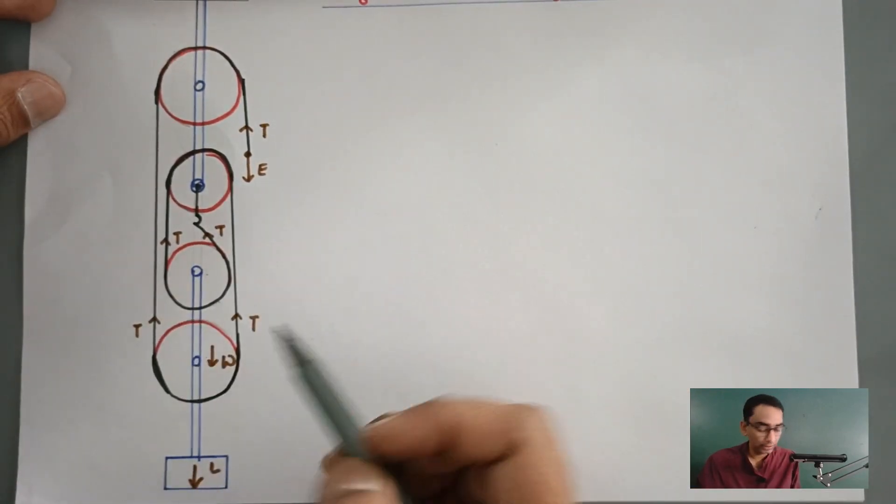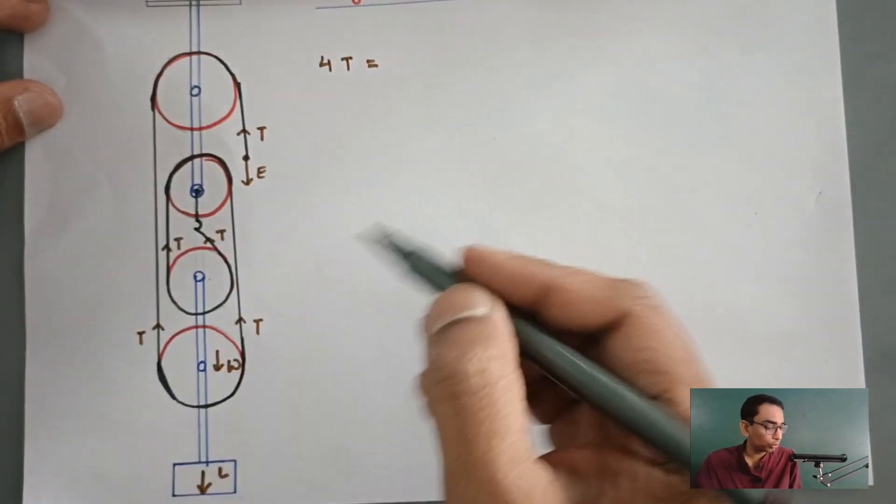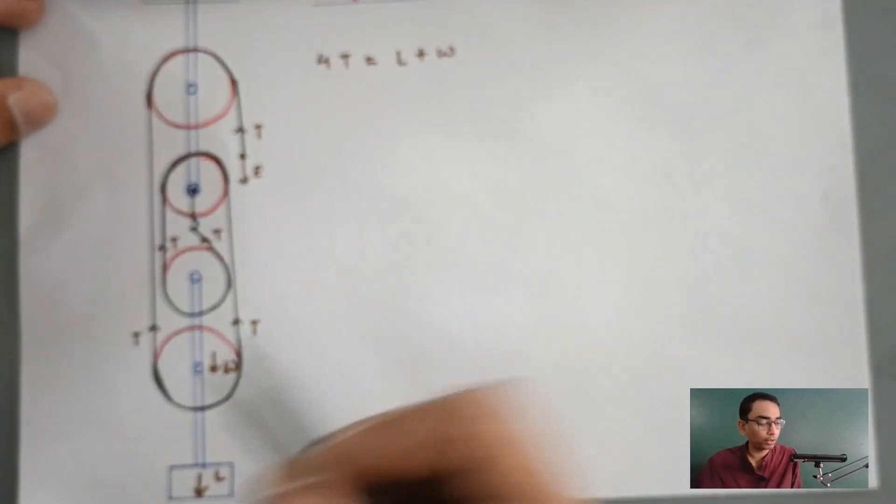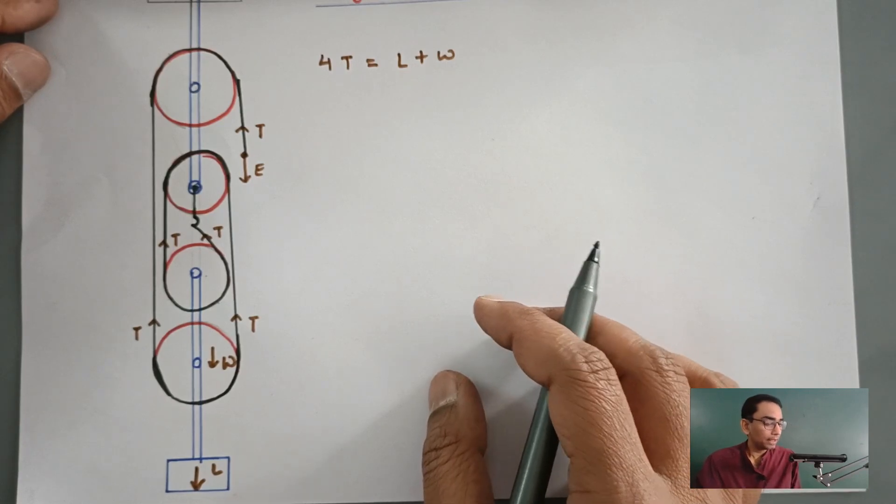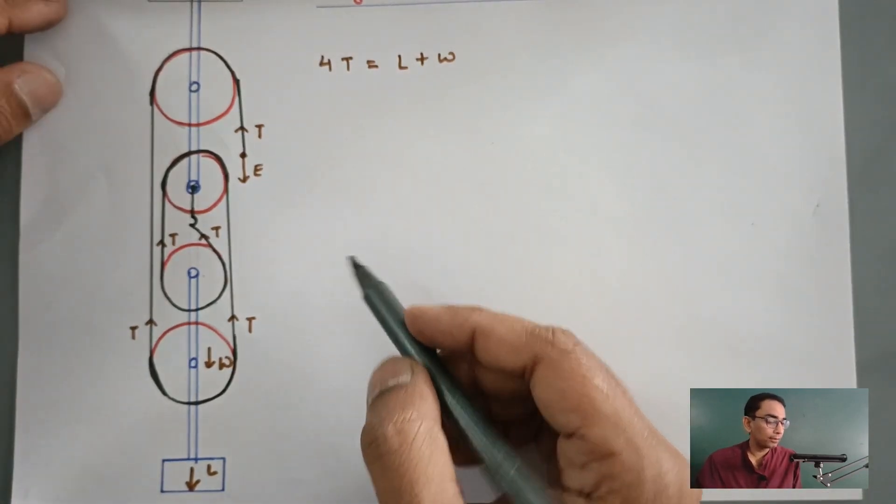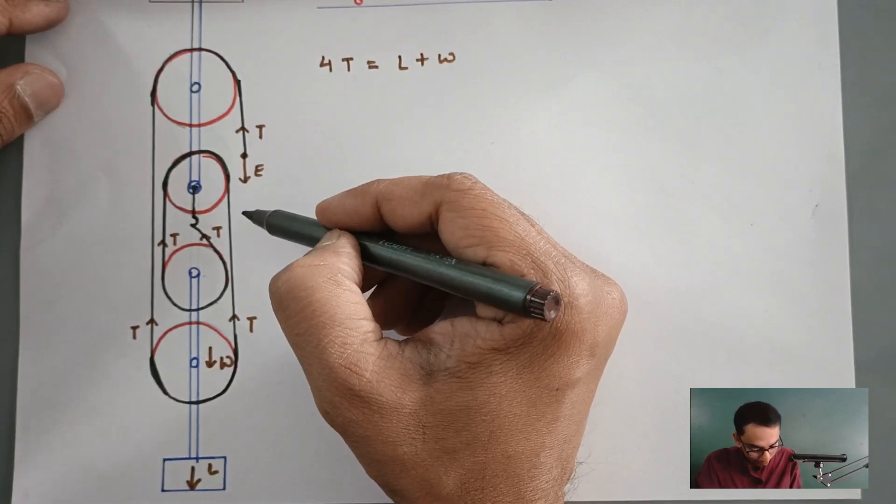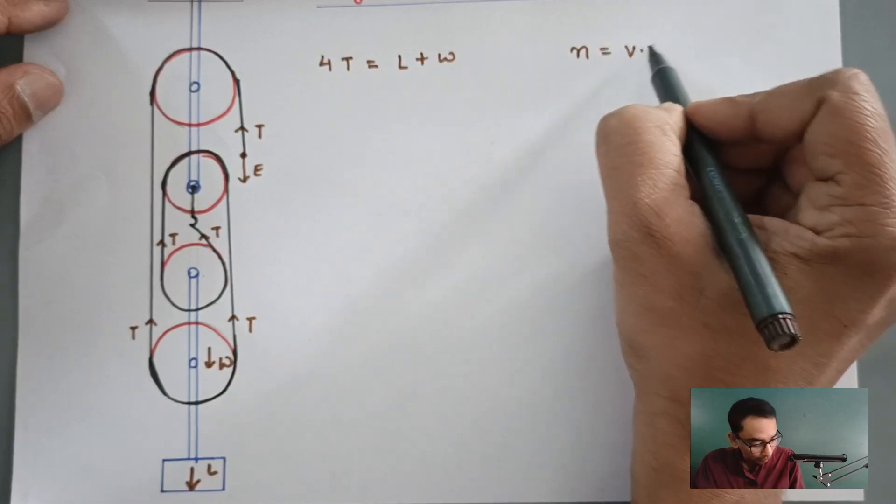Four tension forces are actually balancing the total downward forces that is the load plus weight of the bottom part of the pulley or the tackle system. Now, we also understand one thing that when the effort is in the downward direction, the number of pulleys itself is equal to the velocity ratio.